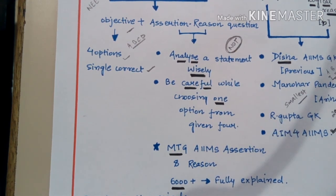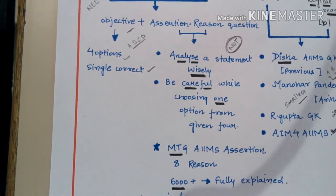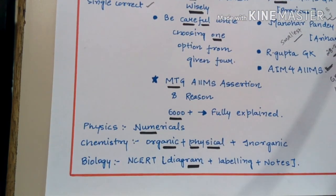Be careful while choosing one option from the given four. First read the guidelines about assertion and reason type questions — after reading the guidelines you will get an idea about what is asked. This is how you can reduce negative marking. If you have crystal clear concepts, none of the assertion-reason questions will go wrong. Since only two weeks are left, revise your concepts many times before the AIIMS entrance examination.